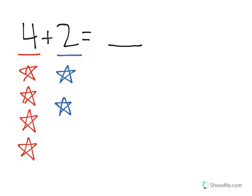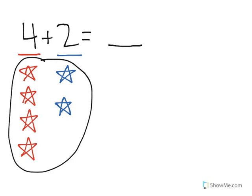Now what we want to find out is how many stars there are all together. And the way that we do that is we count how many stars there are. 1, 2, 3, 4, 5, 6. So if we start with 4 and we add 2, we'll get a total of 6.